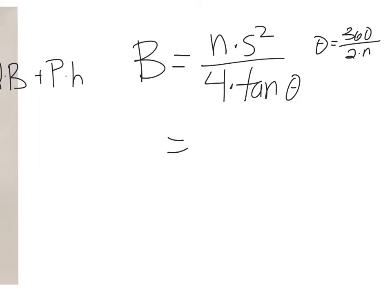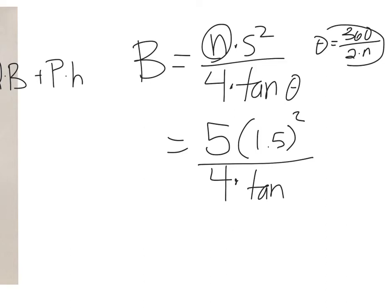N is how many sides this has. It's a pentagon, so that's 5 sides. Every side is 1.5 inches long. The angle, if I take 360 and divide it by 10, is 36 degrees.